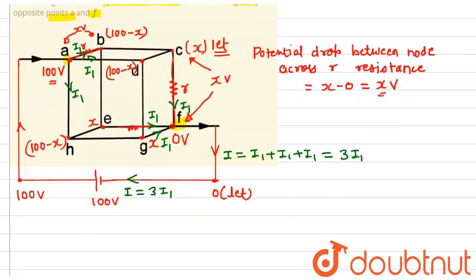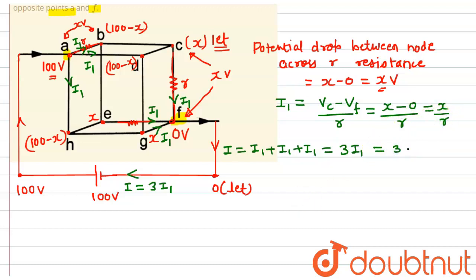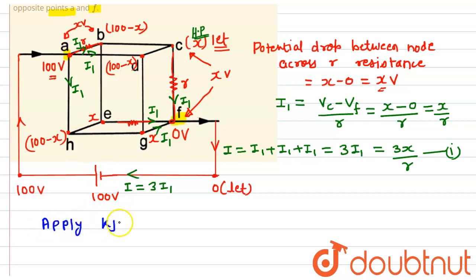If we want to find I1, it can be given as the potential difference between C and F: Vc minus Vf upon R. Vc is x volt and Vf is 0 volt, so I1 equals x upon R. Therefore, the total current I = 3I1 = 3x upon R. Consider this as equation one. Now apply Kirchhoff's junction law at node C, assuming x is of higher potential. Node C is connected to B, D, and F.